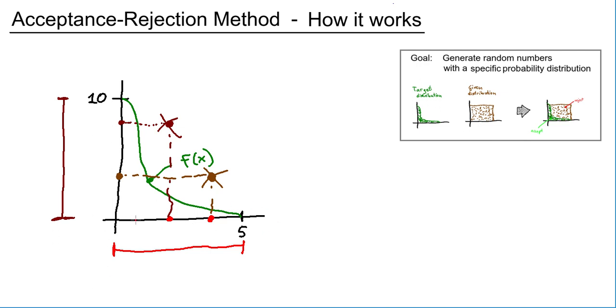Again, we create a random number between 0 and 5. Here's a good place. So let's create a random number here. That's a random number. And again, we create a random number between 0 and 10. Let's say this time is here. And then we check and... Okay! This time we are below the function.